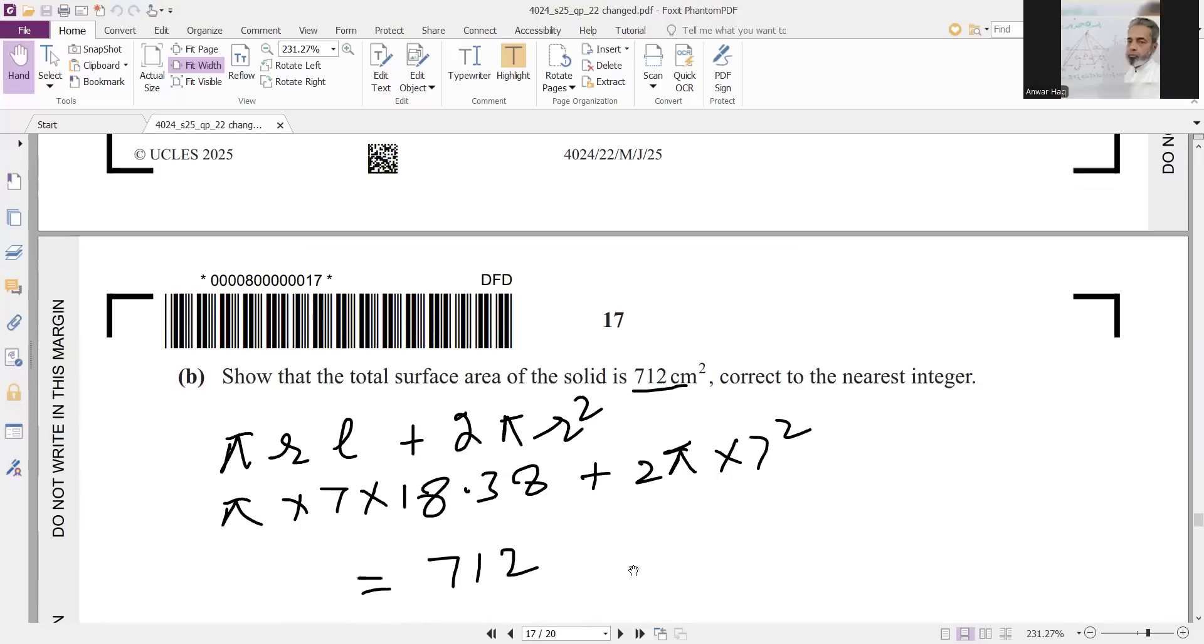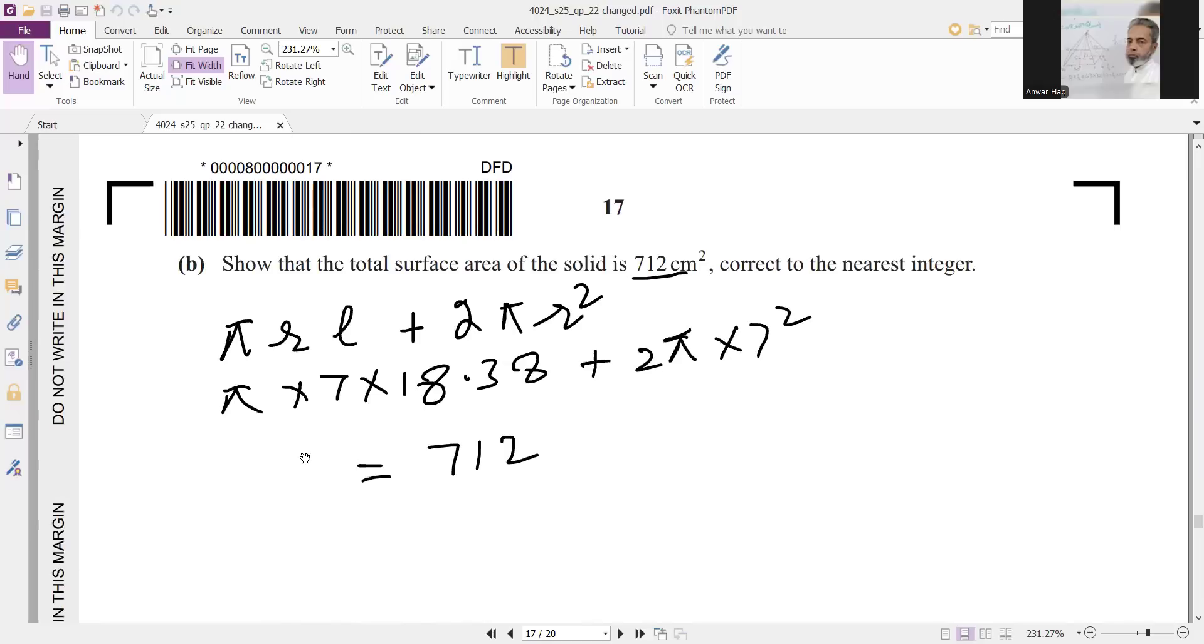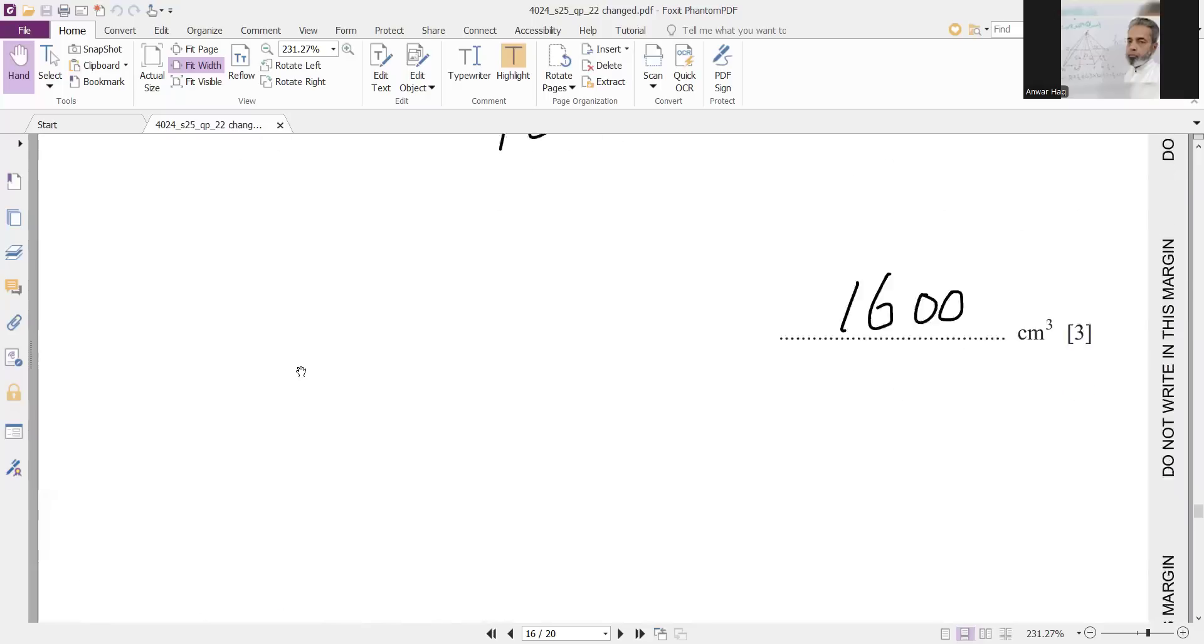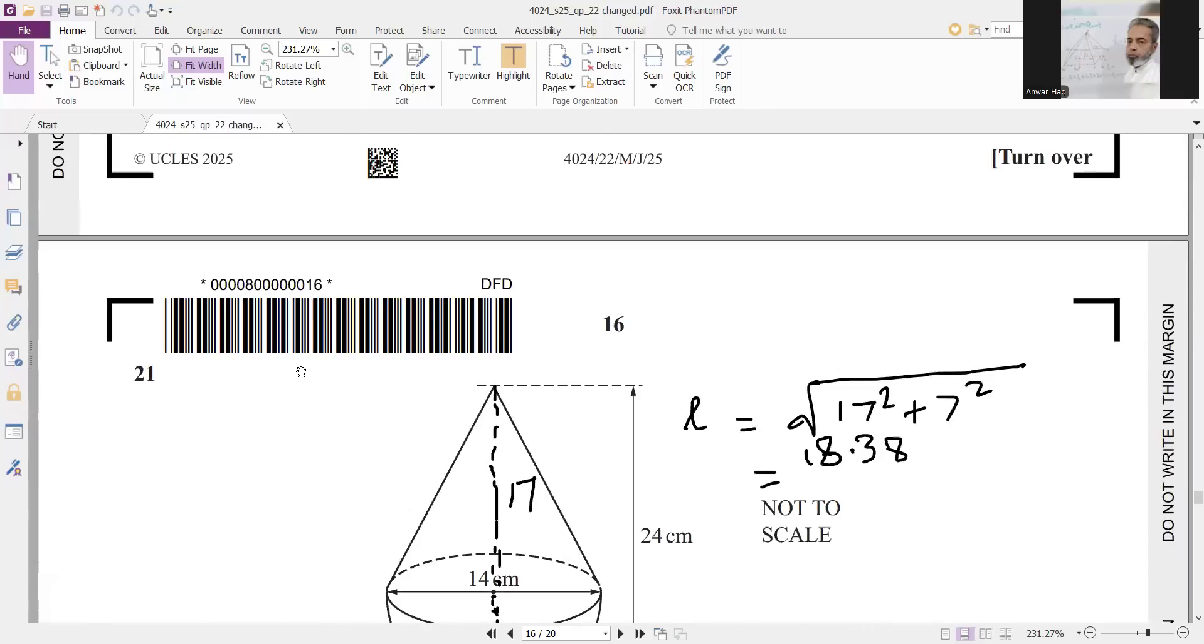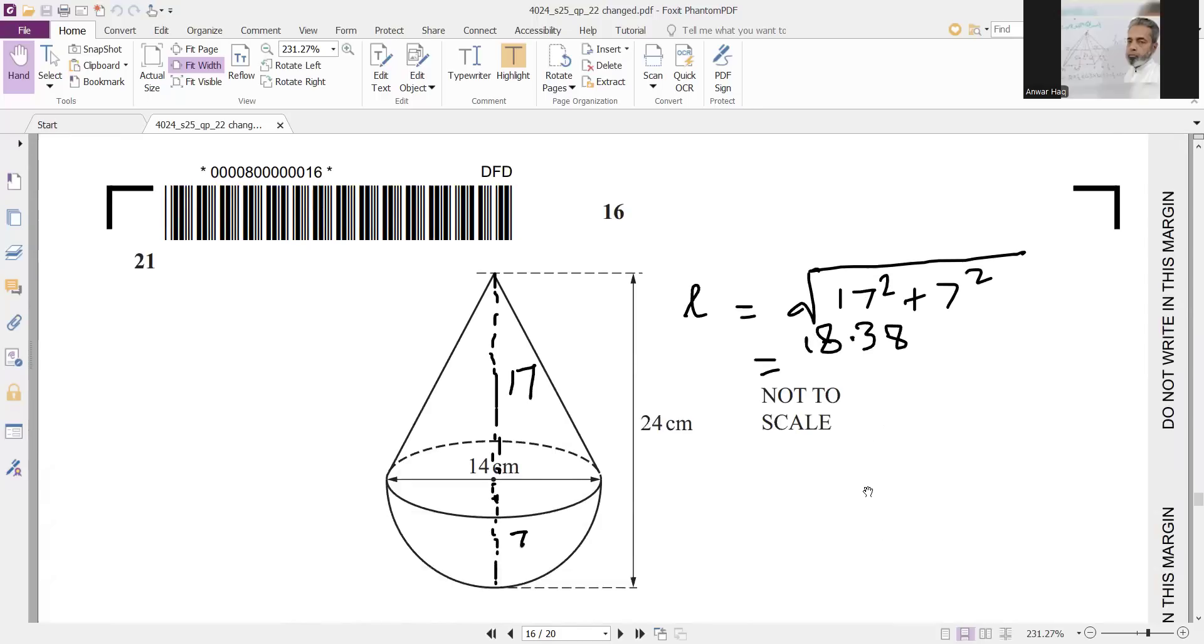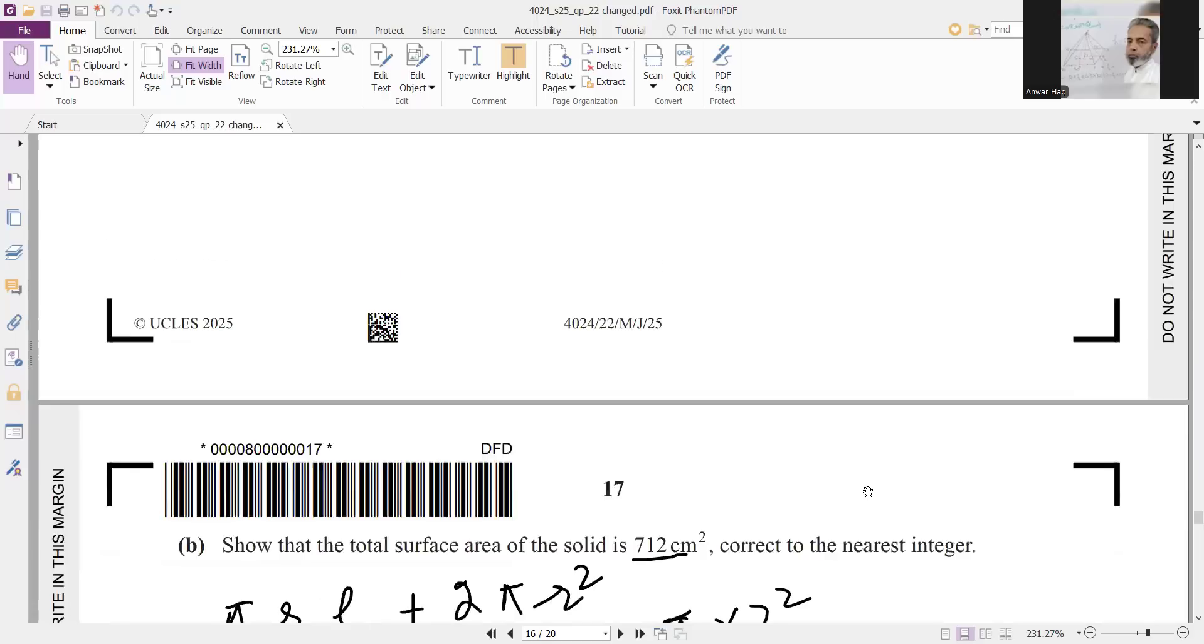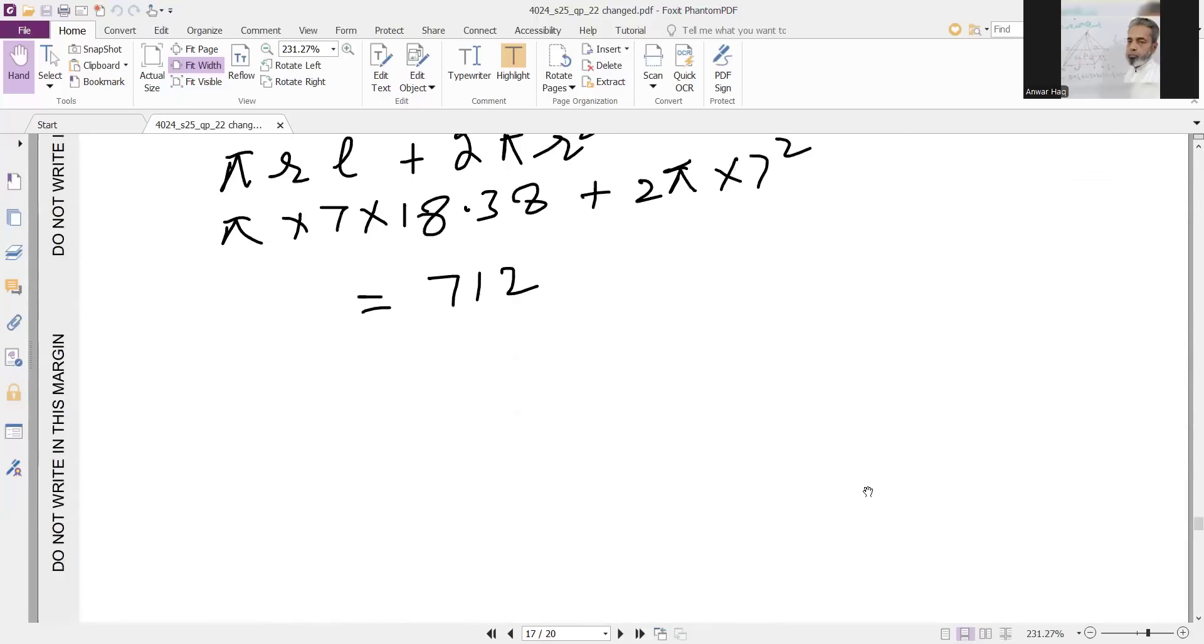Next, show that the total surface of the solid is 712. So 712, again pi r l is required. I have calculated on the diagram l equals using Pythagoras theorem. This is your right angle triangle. This one is 7. So 17 square plus 7 square equals 18.38. Use these values in the formula. You will get 712.